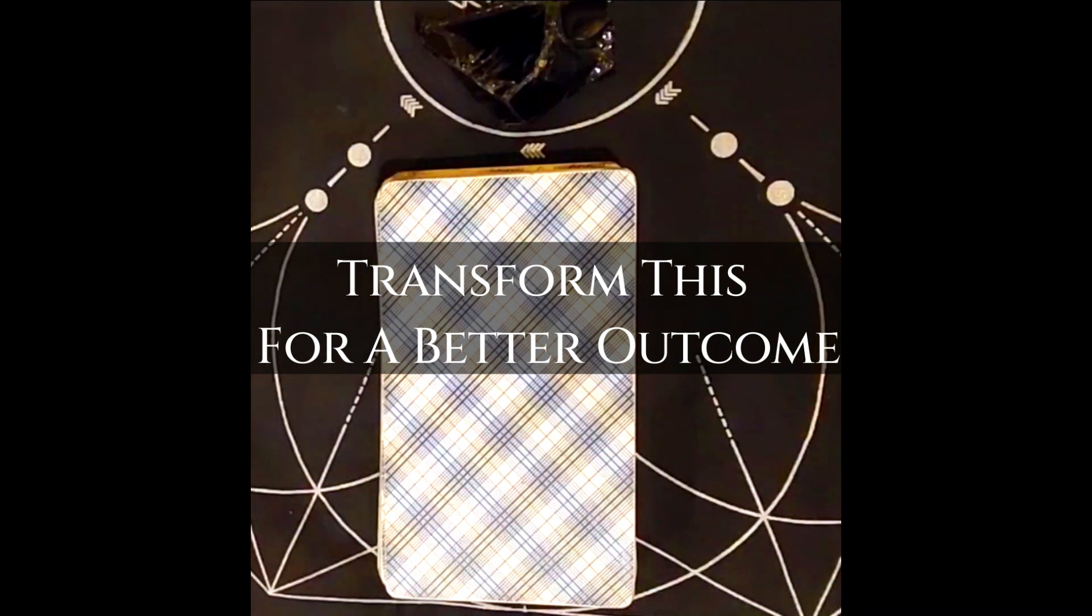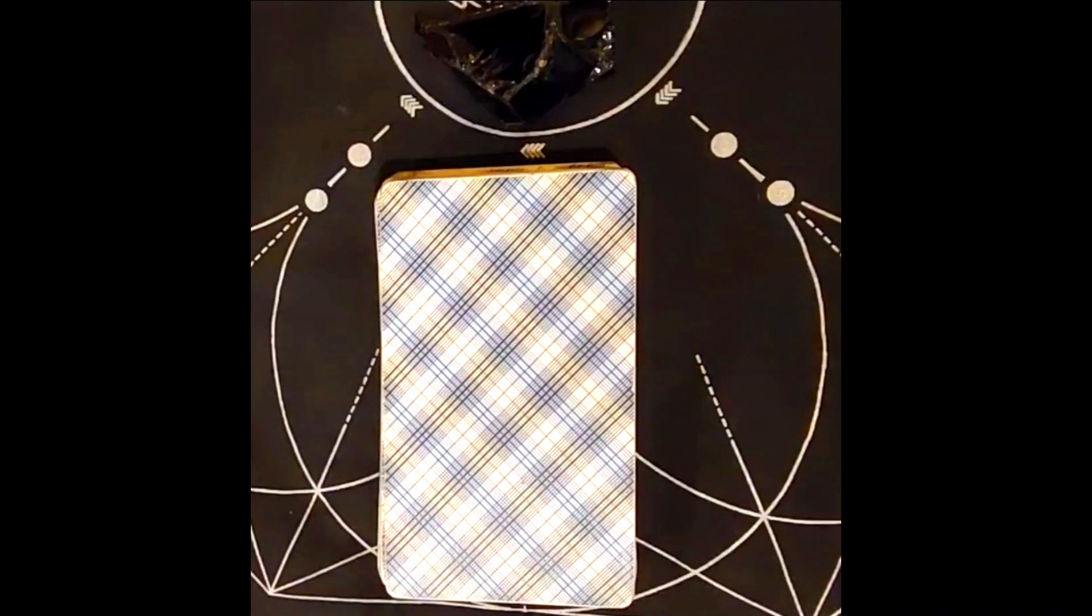This is what you need to transform and it has to come from you in some kind of way. It has to come from your heart space, your feelings, your emotions. And whatever it is that you have to transform, it's going to allow you to bring forth some type of fruit, alignment, pleasure, joy, peace, happiness.